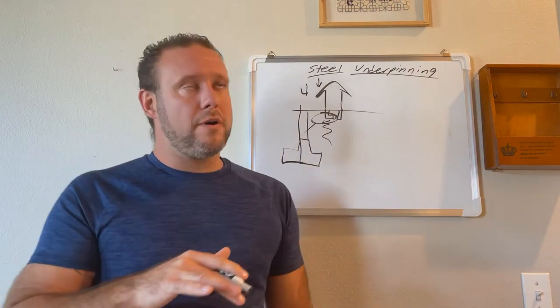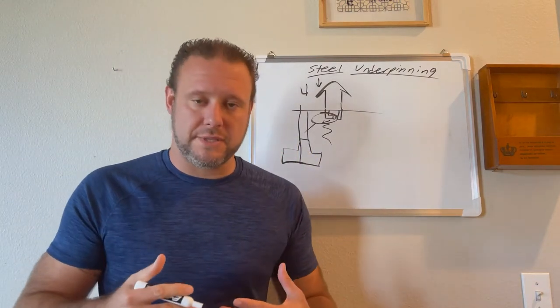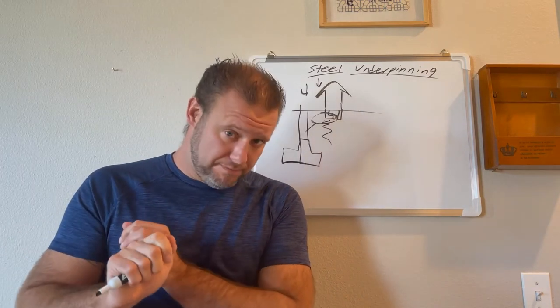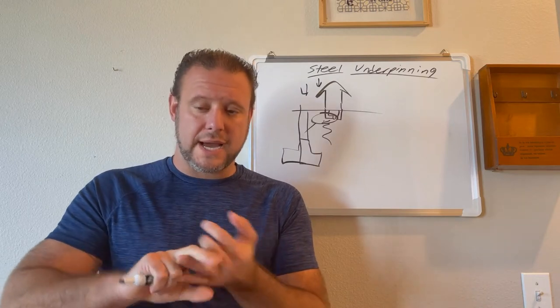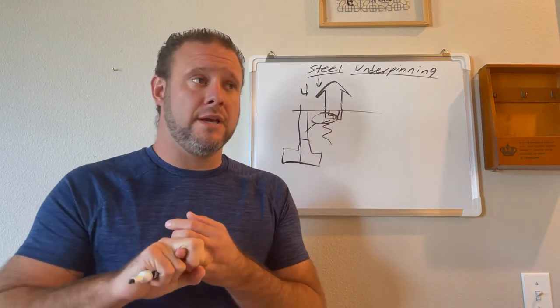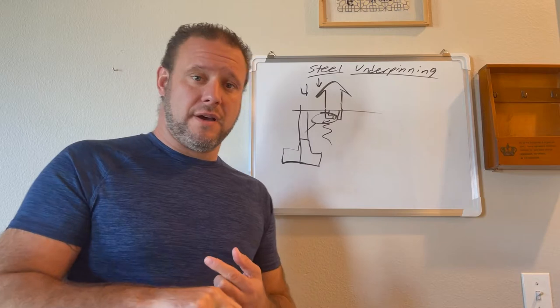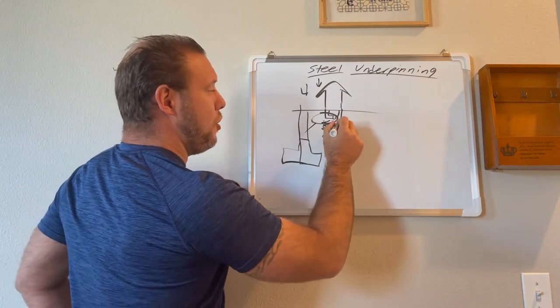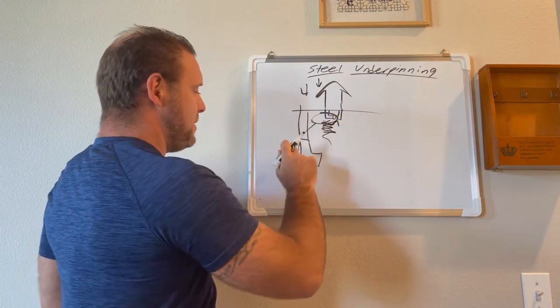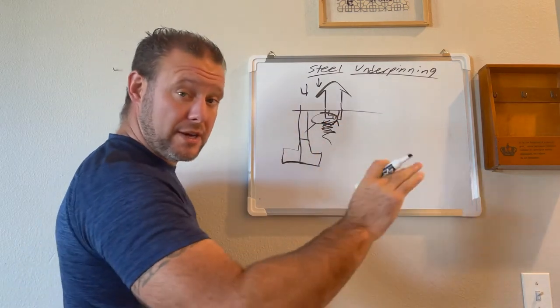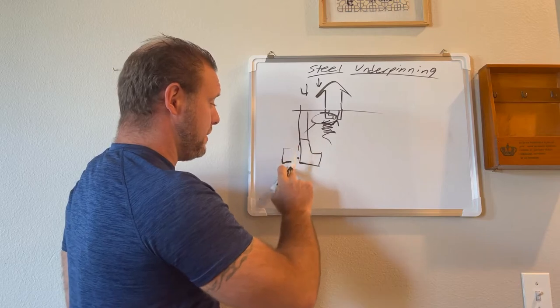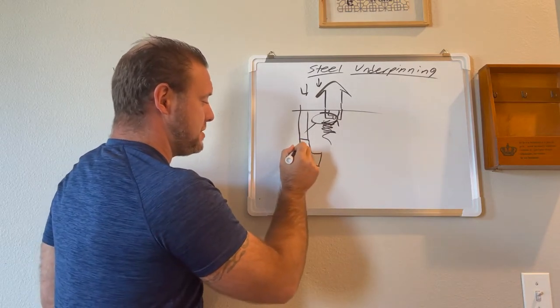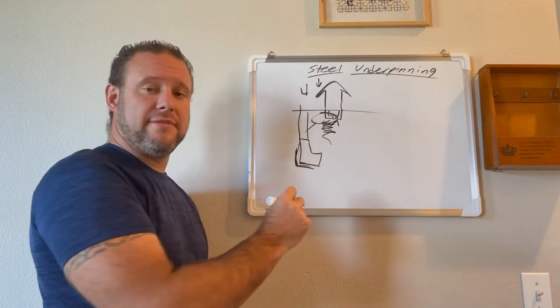The cool part about the steel underpinning systems is they accomplish one of two things. It's either taking soil out of the equation or it is tying directly into the soil using mechanical means of lifting and stabilizing the structure, which means we're not going to treat the soil down here and hope that it lifts this up. What we do is they'll actually chip out, they'll actually break the footing of the home a little bit and then they'll put a steel bracket on the underside of it.